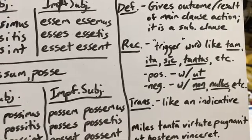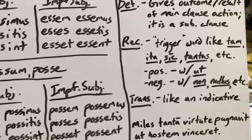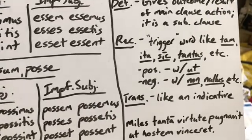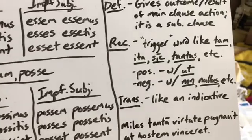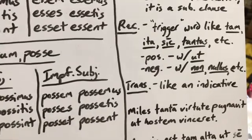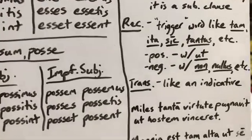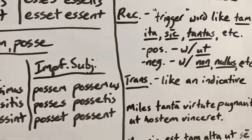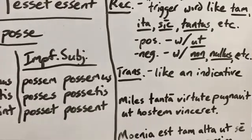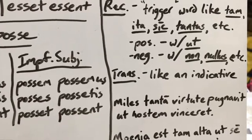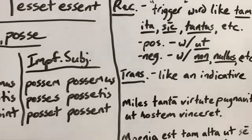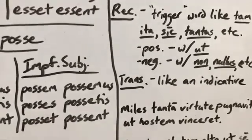The positive result clause is going to be introduced by the word 'ut.' The negative will also have 'ut,' but then it will also have 'non,' 'nullus,' or another negative word — not usually 'ne.' And then we translate it like an indicative, so you don't need 'may' or 'might' or anything like that. Example sentence: the soldier fought with so much courage — or such great courage — and then the result: that he conquered the enemy. The result of fighting with such great courage is that he conquered the enemy.